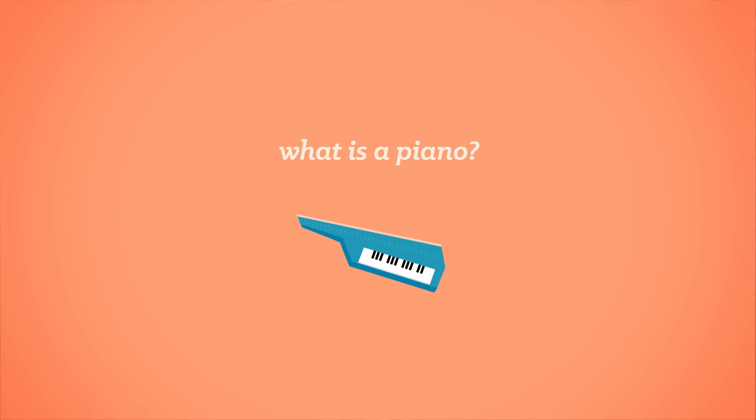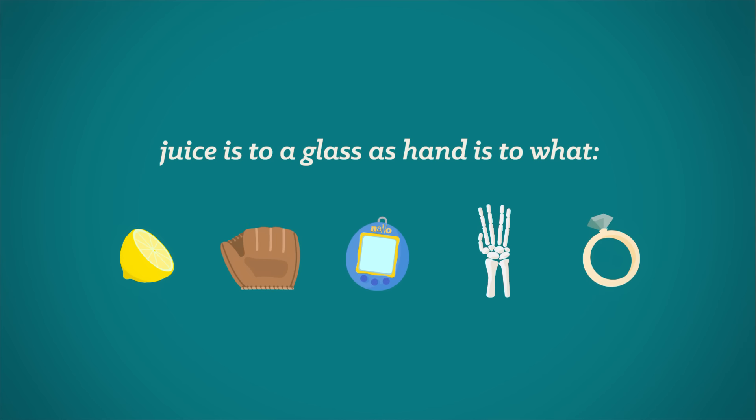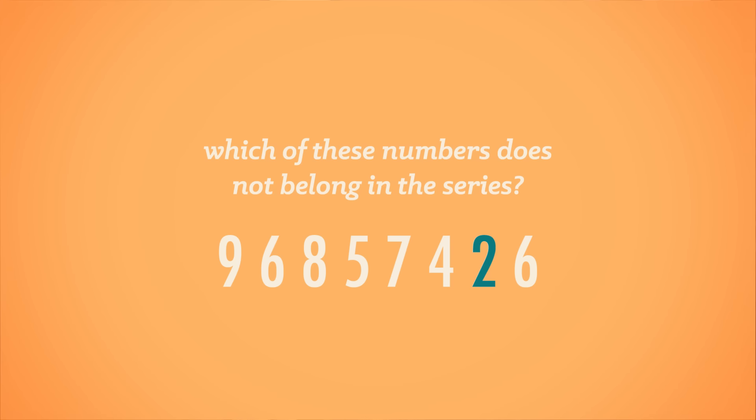And answers to the questions asked earlier: a piano is a musical instrument played using a keyboard; the banana is the least similar to the others; juice is to glass as hand is to glove; the number two does not belong in the series; and Bernice began with 23 jellybeans. Today, your intelligent mind learned how we currently use WAIS and WISC tests to measure intelligence, and how important it is that a test be standardized, reliable, and valid. We also looked at how genetics, environment, testing bias, and stereotype threat can affect IQ test performance.